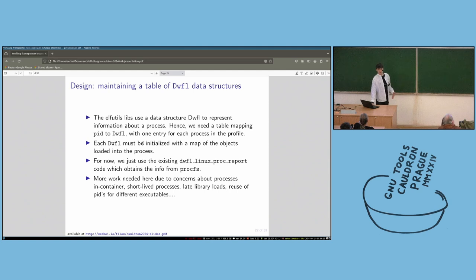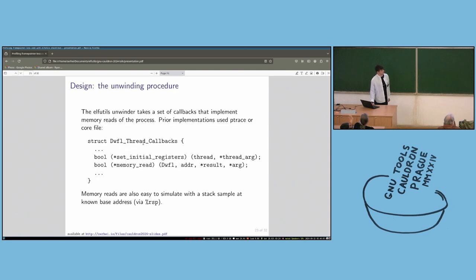So in EU stack trace, what types of not completely straightforward things do we have to do? Well, first off, existing LFT tools libraries kind of assume the master structure for representing information about one process is the DWFL. Obviously, we're looking at all processes on a system. So we end up with a table of these by process ID. For now, we just use LFT tools existing Linux PROC report code, which obtains the information from PROCFS. So here, there is more work needed to make sure this table accurately reflects the state of the system. There are some edge cases that I need to handle.